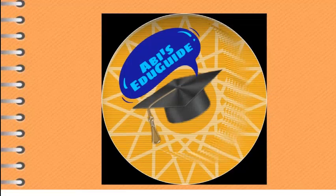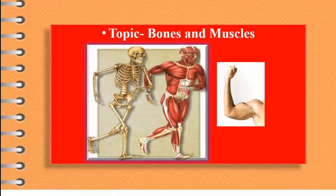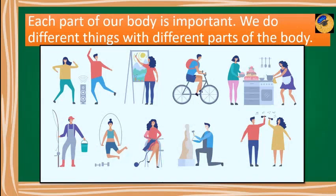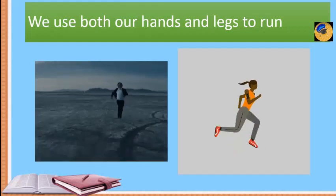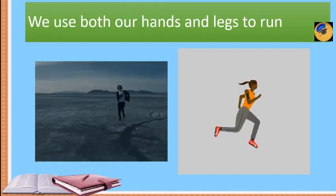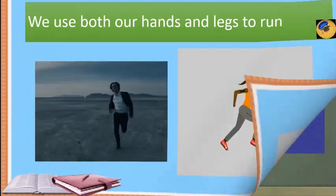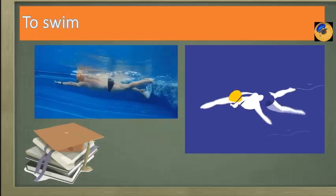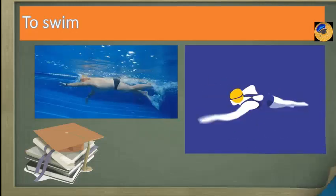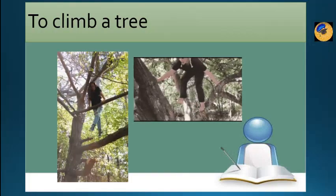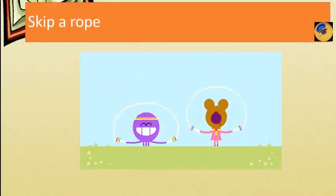Hi everyone, welcome to our class! Today's topic is bones and muscles. Here you can see images of bones and muscles. Each part of our body is important — we do different things with different parts. Here you can see the actions people are doing. We use both our hands and legs to run, swim, skip the rope, and more.